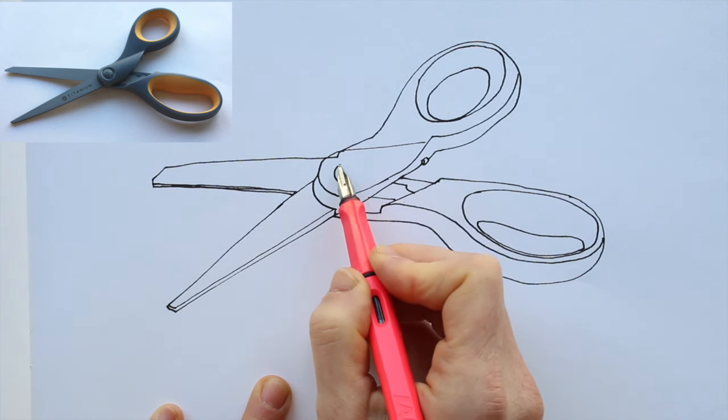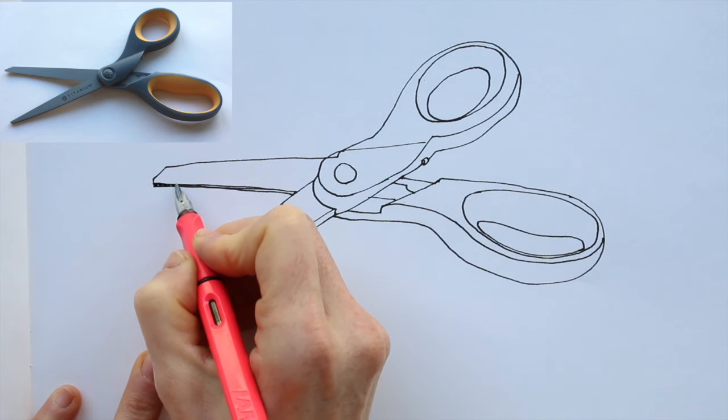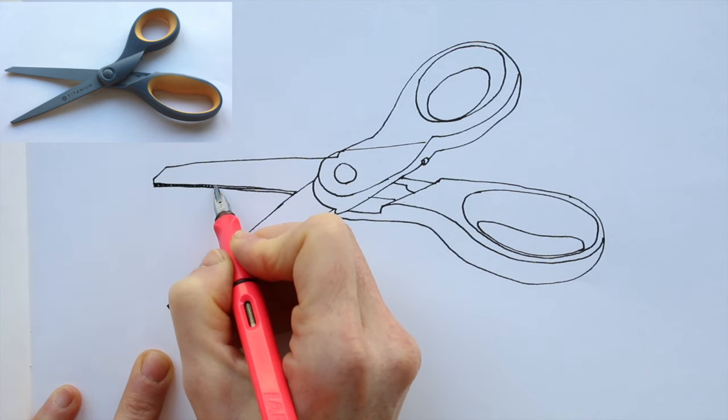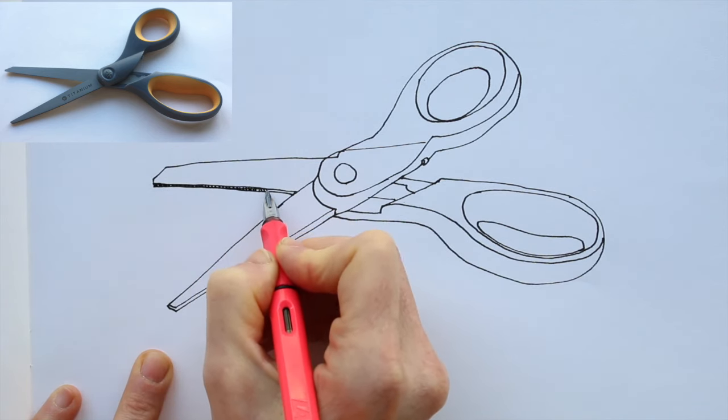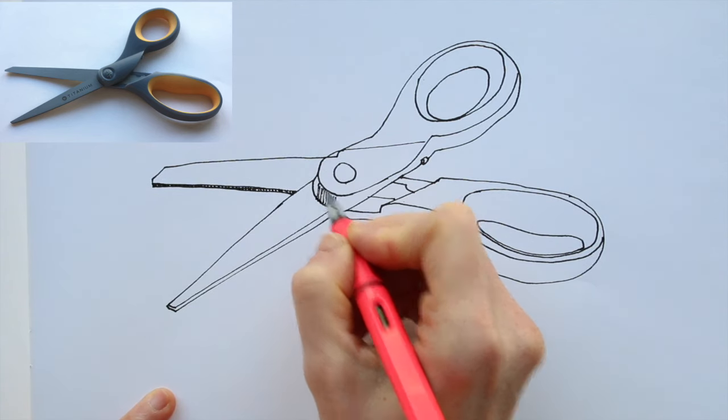When all details are added, with hatching lines you can add shadows and those will give your subject a sense of depth. Don't forget the drop shadow. Without it, the subject will be floating rather than sitting on a surface.